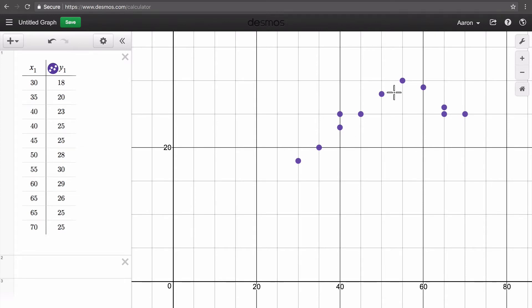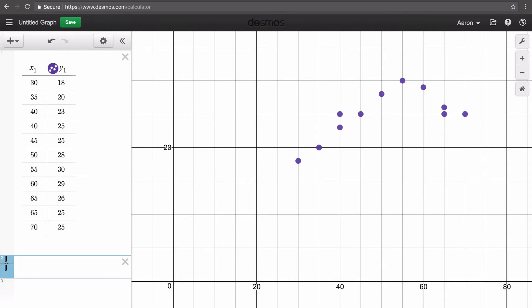So I would say that this data appears to be nonlinear, which means we should probably use a quadratic regression to calculate an equation to best fit this model, or to best model this data.